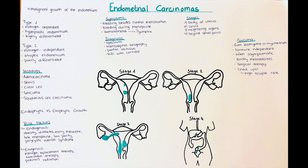Hello and welcome to this channel. My name is Victoria and in this video we will talk about endometrial cancer. Endometrial cancer is a malignant growth of the endometrium, which is the inner lining of the uterus that usually sheds in a normal menstruation. It is the most frequently occurring malignant growth of the female genital tract.